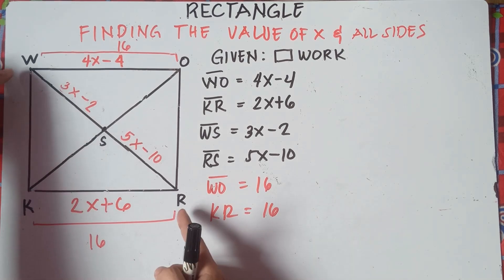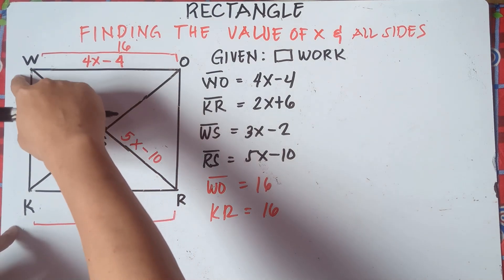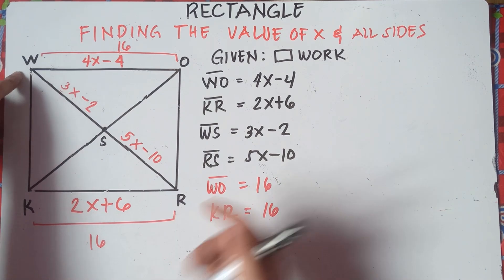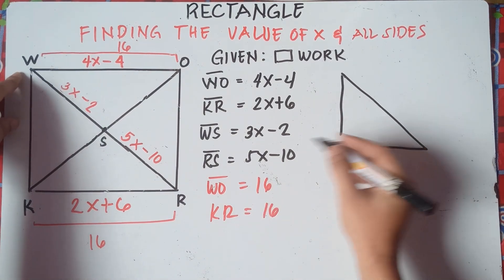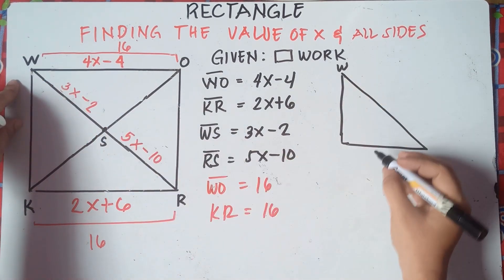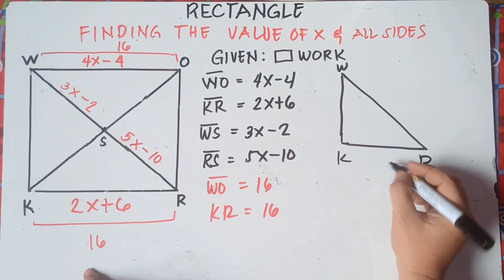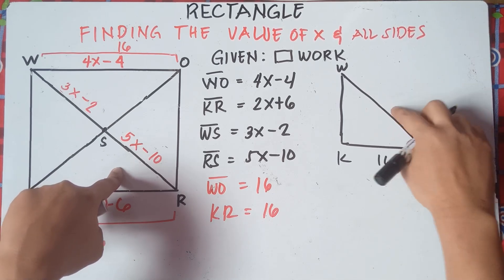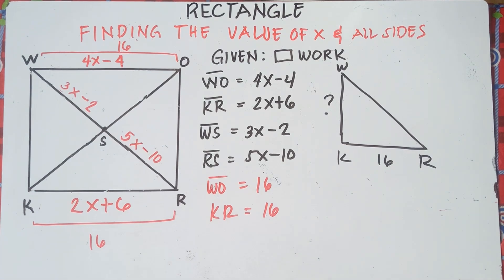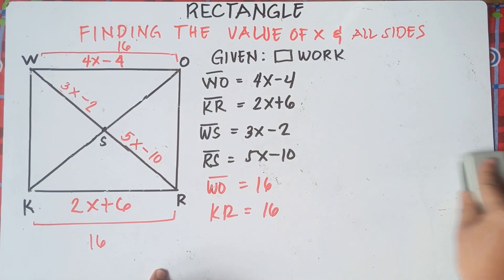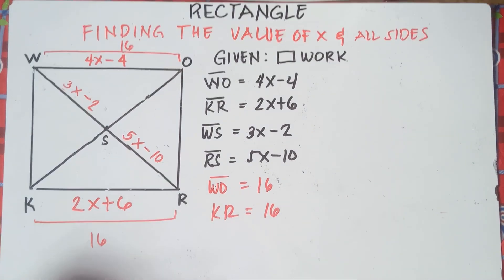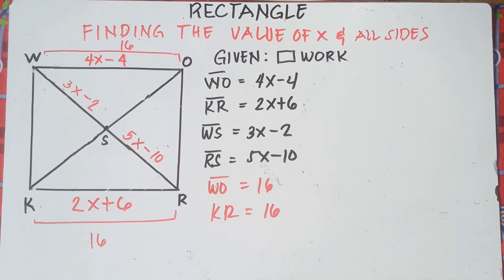Next, we need to find the value of WK. We cannot get WK directly — we first need the value of WR so that we can use the Pythagorean theorem. If we cut the rectangle in half, we get triangle WKR. We already have KR which is 16, and we have the given expressions 3x minus 2 and 5x minus 10 for the diagonal segments.